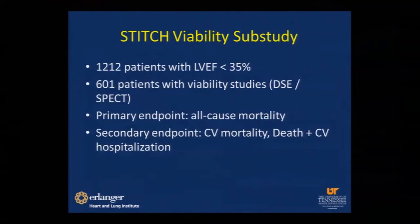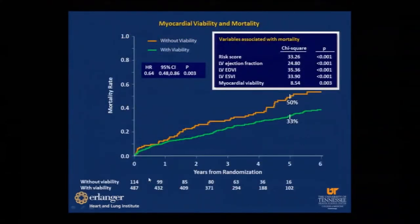The original STITCH cohort was 1,212 patients with EF less than 35% randomized to surgery or medical therapy. Of those, 601 patients had viability studies done using dobutamine stress echo or SPECT imaging. The primary endpoint was all-cause mortality and the secondary endpoint was cardiovascular mortality, death plus CV hospitalization. The mortality rate was much lower in patients with viable myocardium based on imaging studies — however, these are univariate analyses.